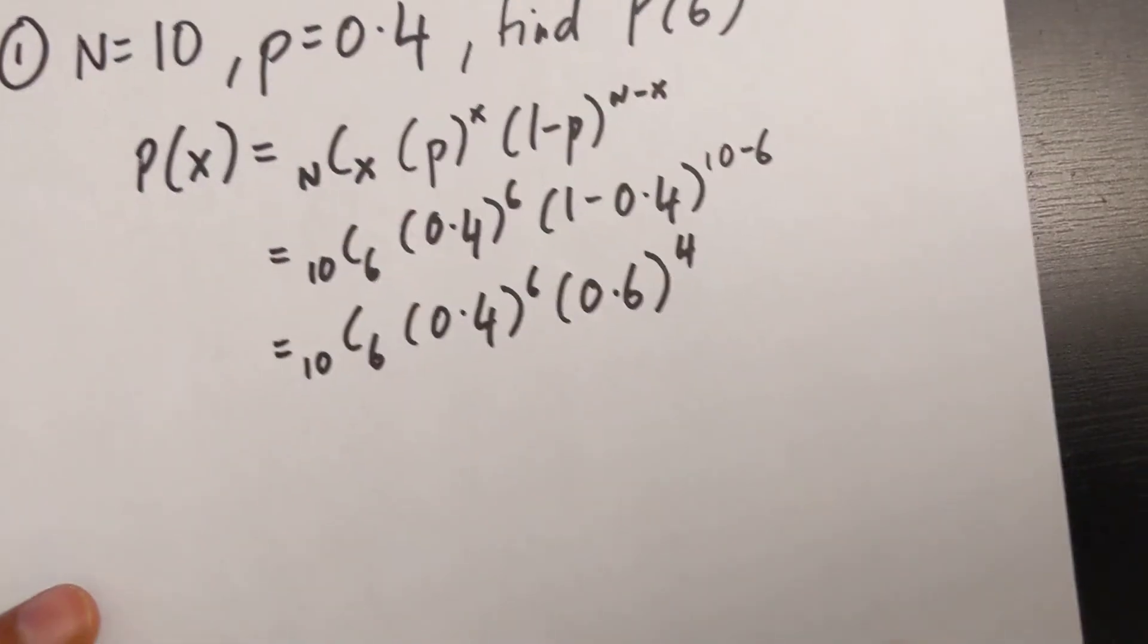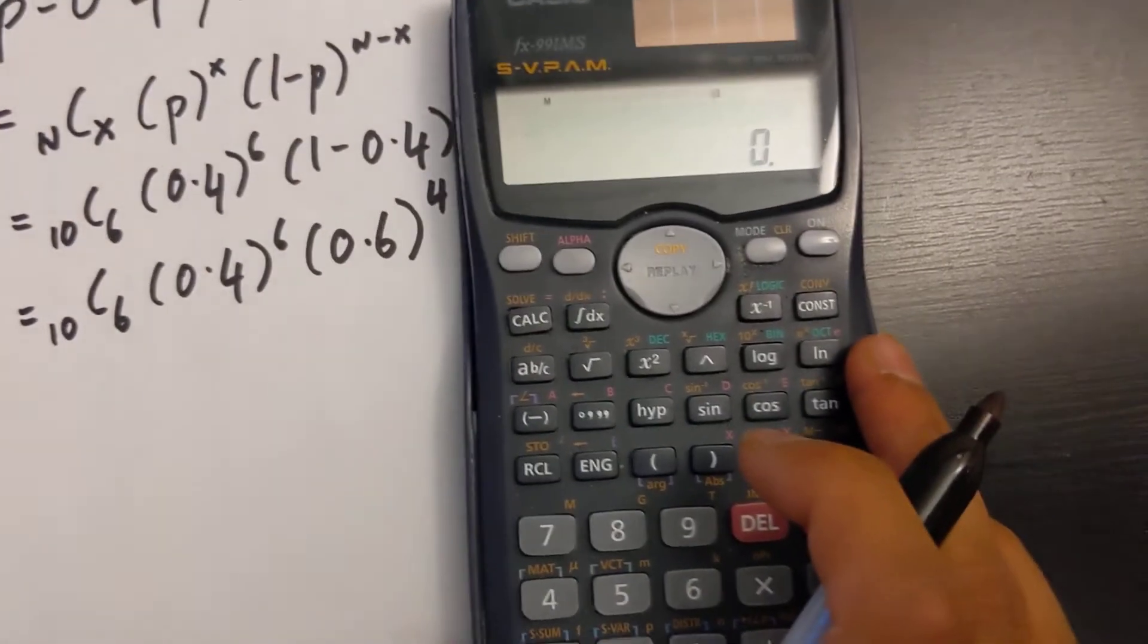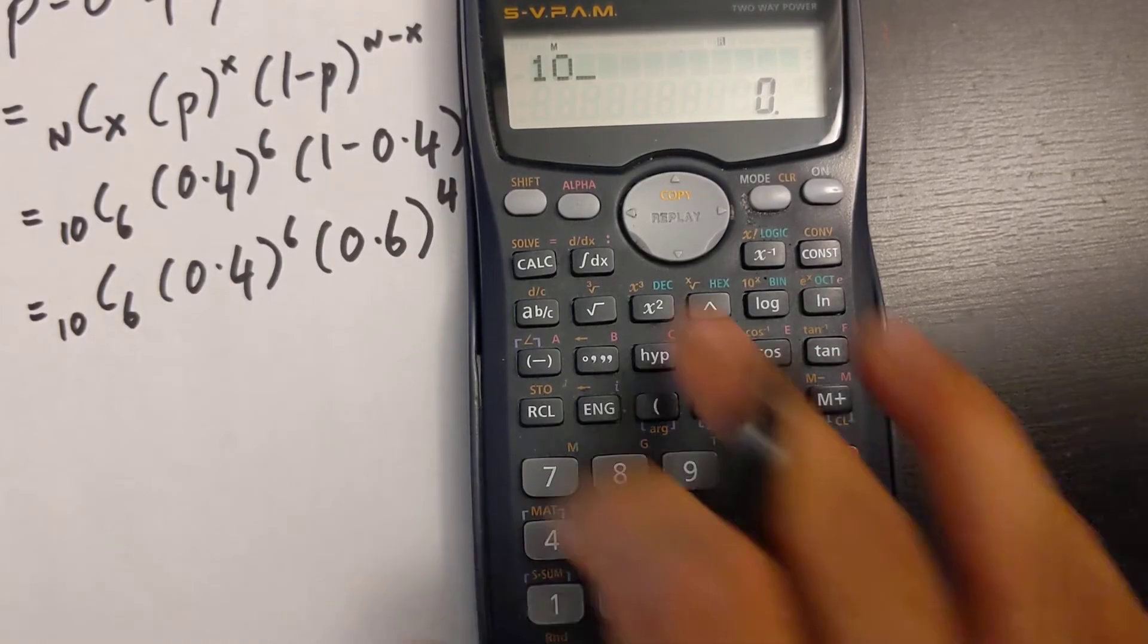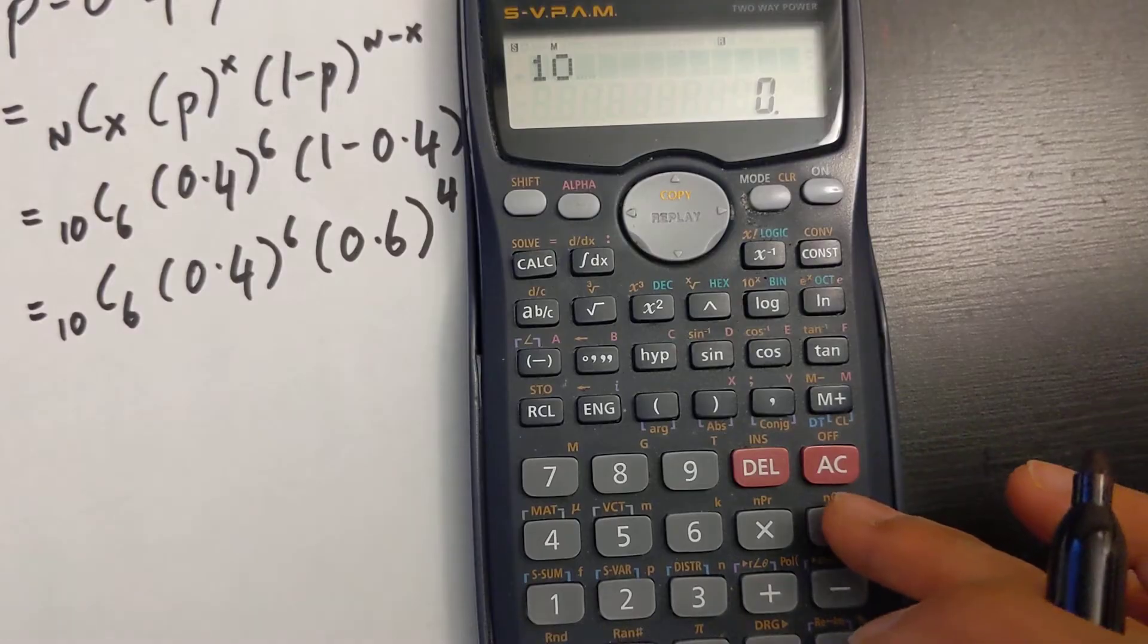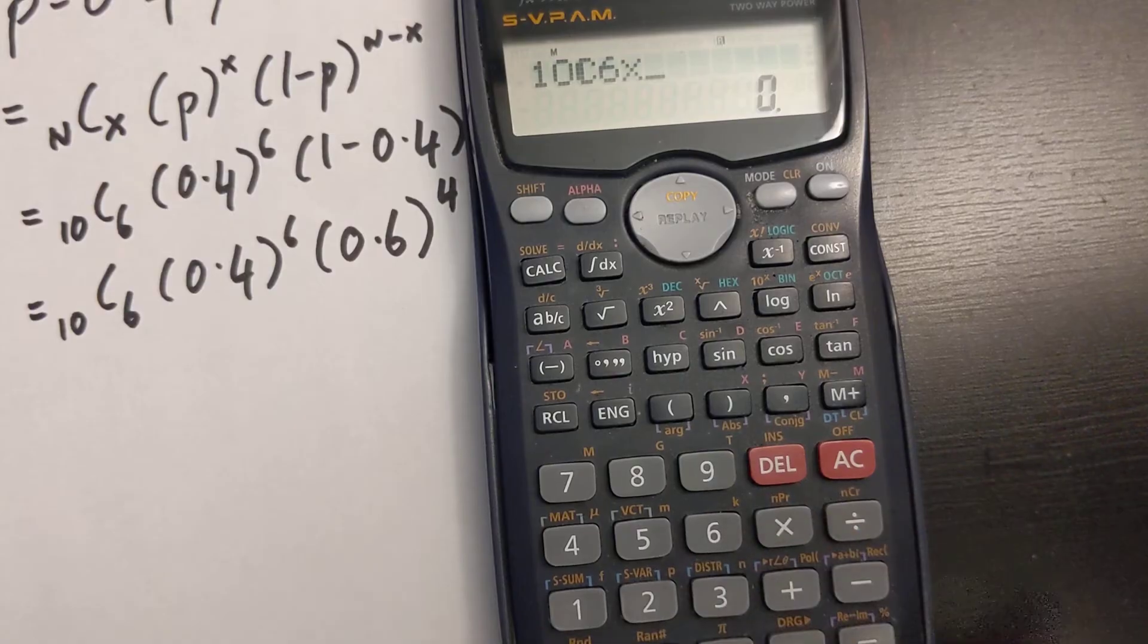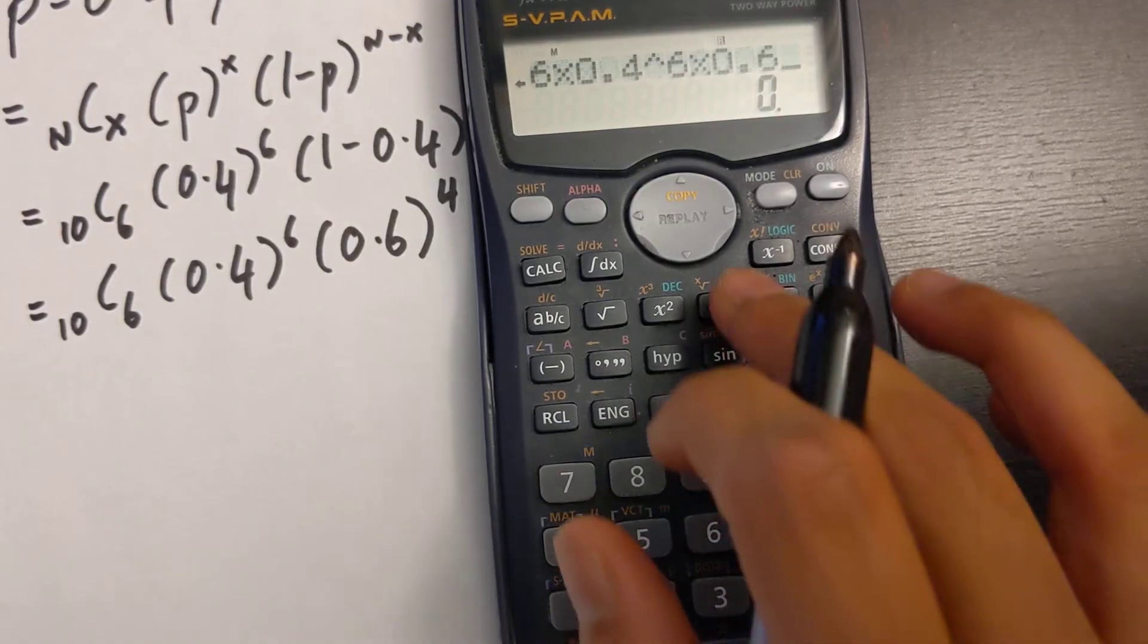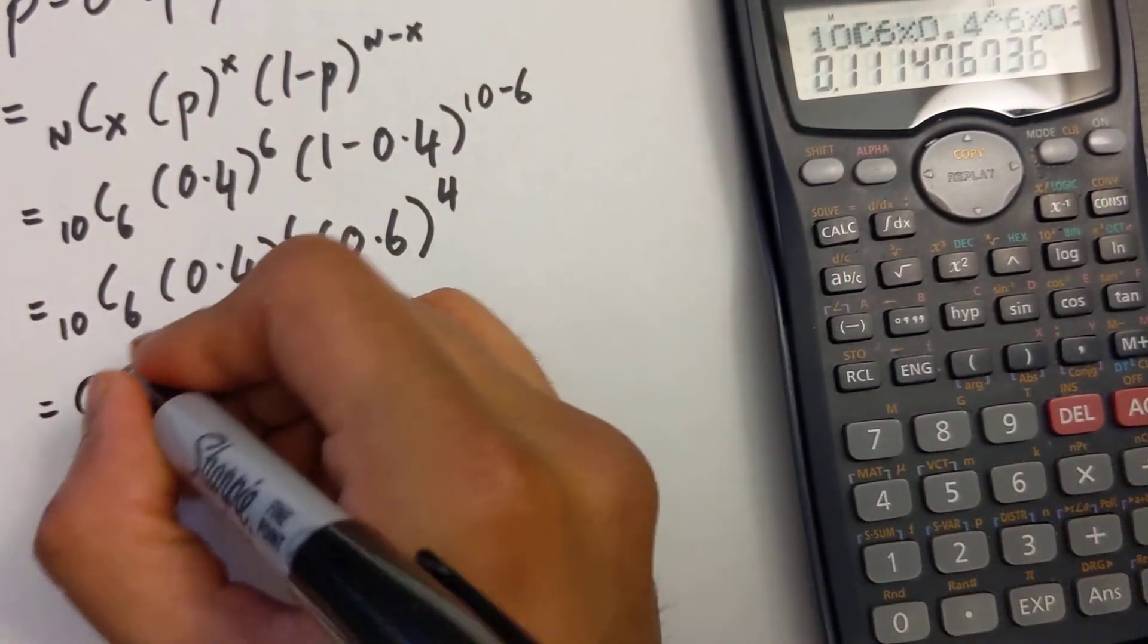And finally, I want to type that in my calculator. I'm going to show that right here in my scientific calculator. Okay, so I have 10, then for the C button, I'm going to hit shift, and my divide sign might be different in your calculator. So 10C6 multiplied by 0.4 to the exponent of 6, multiplied by 0.6 to the exponent of 4. I had equals 0.1115.